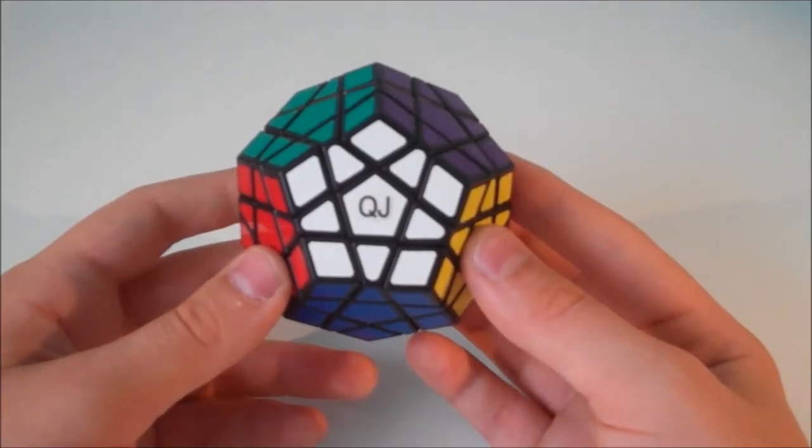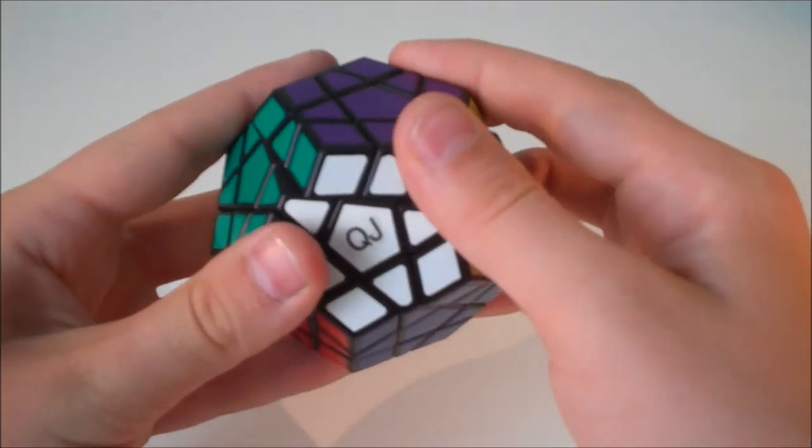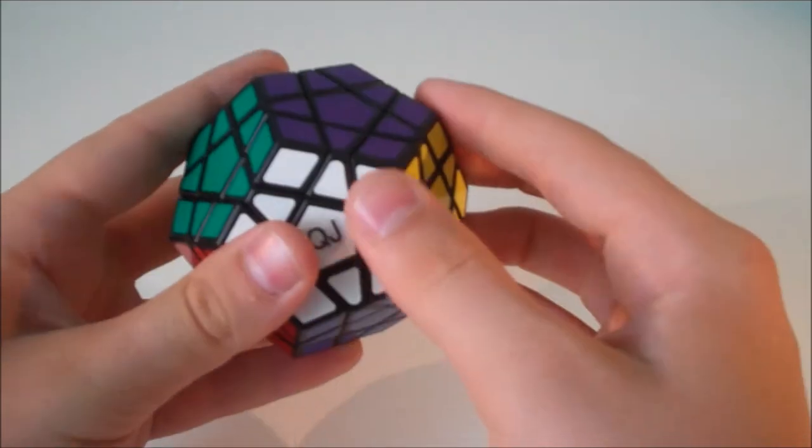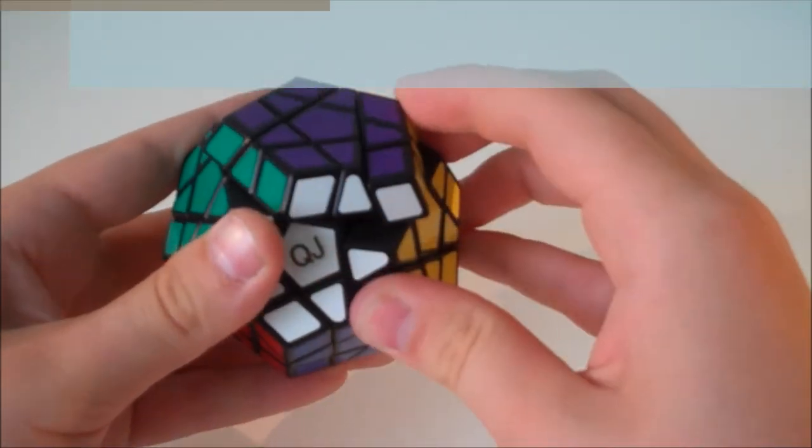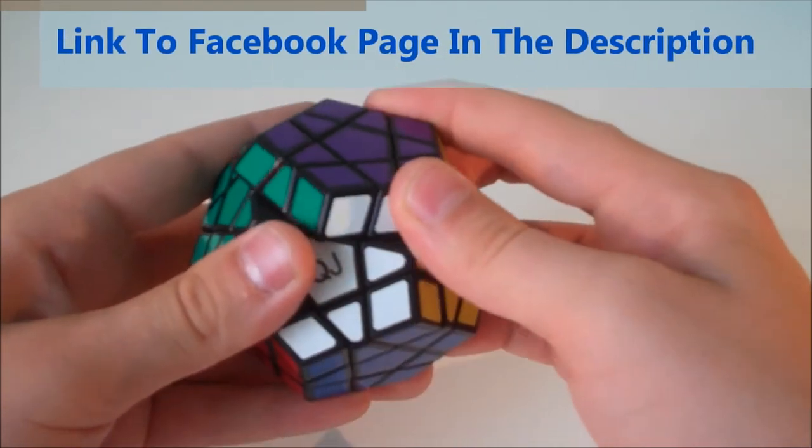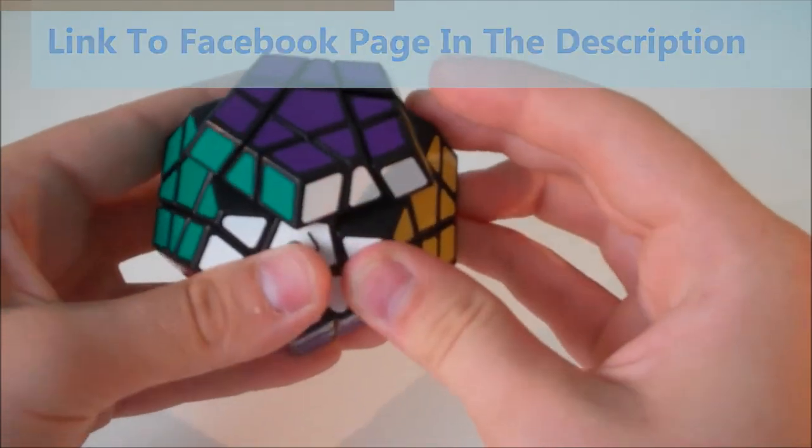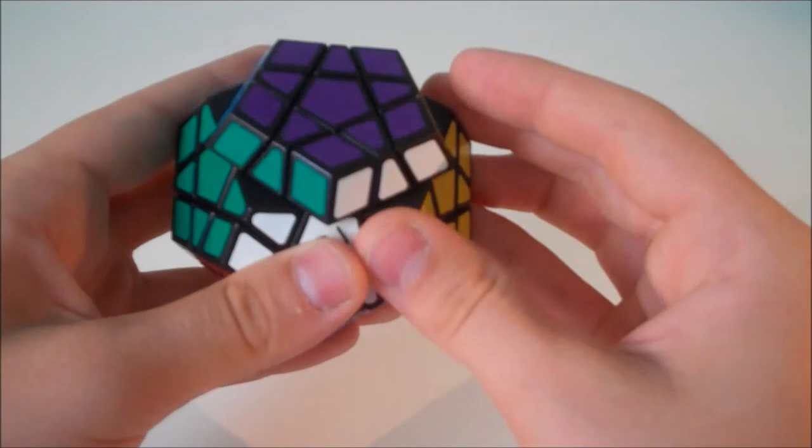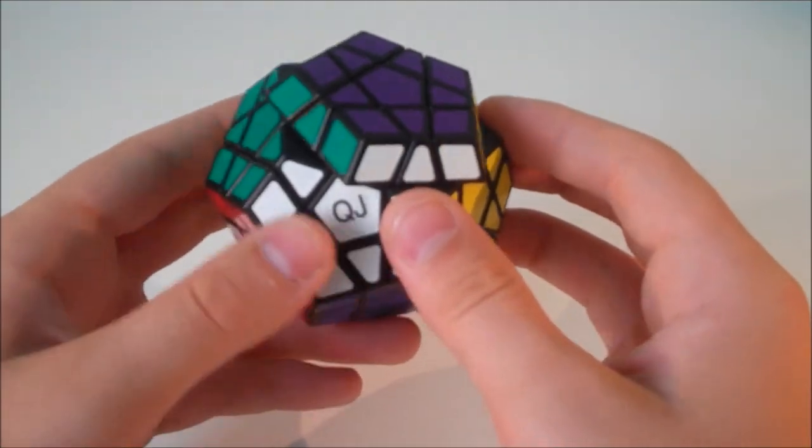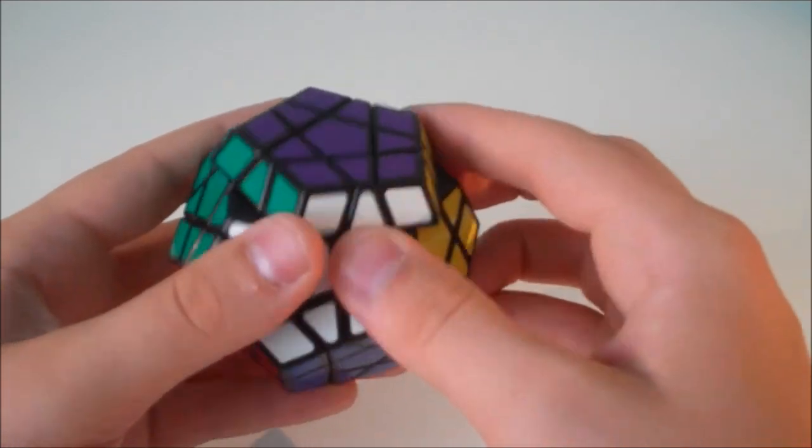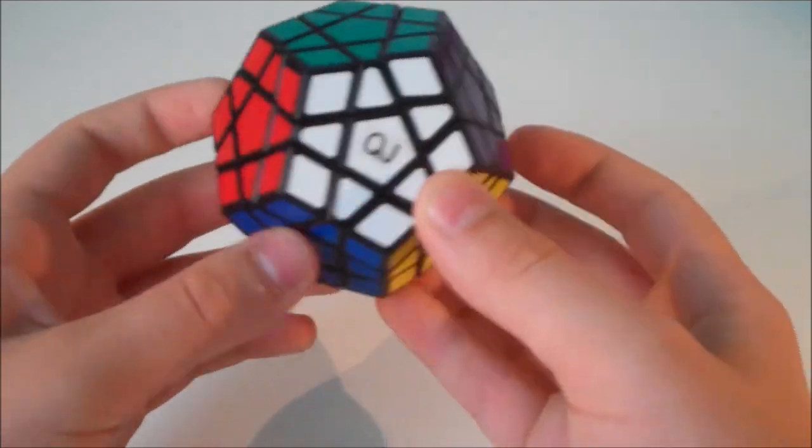The puzzle can corner cut pretty well. It can cut over half a cubie but not quite a whole cubie, which is quite good considering how many faces the puzzle has. When you try to force the puzzle over one cubie this can cause the puzzle to pop. However, it does only pop rarely and normally only when I'm speed solving and I tend to force the cube a bit more.